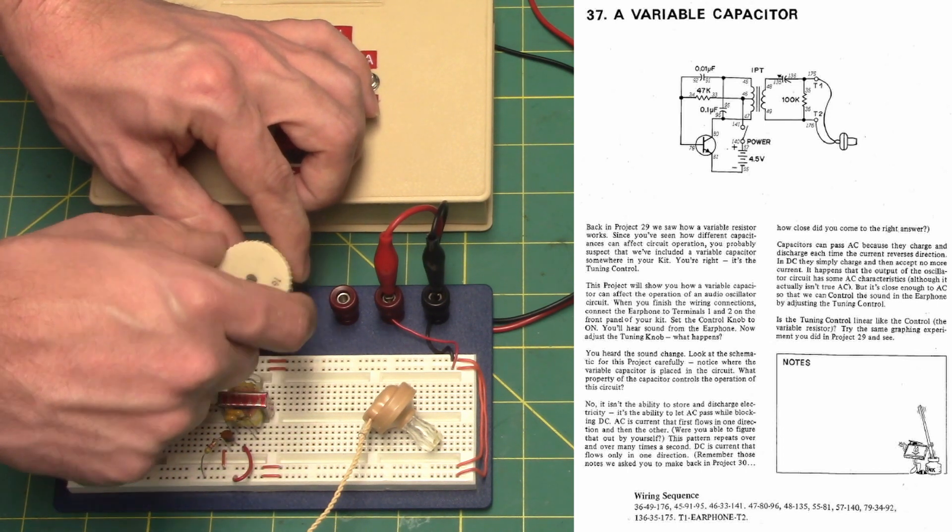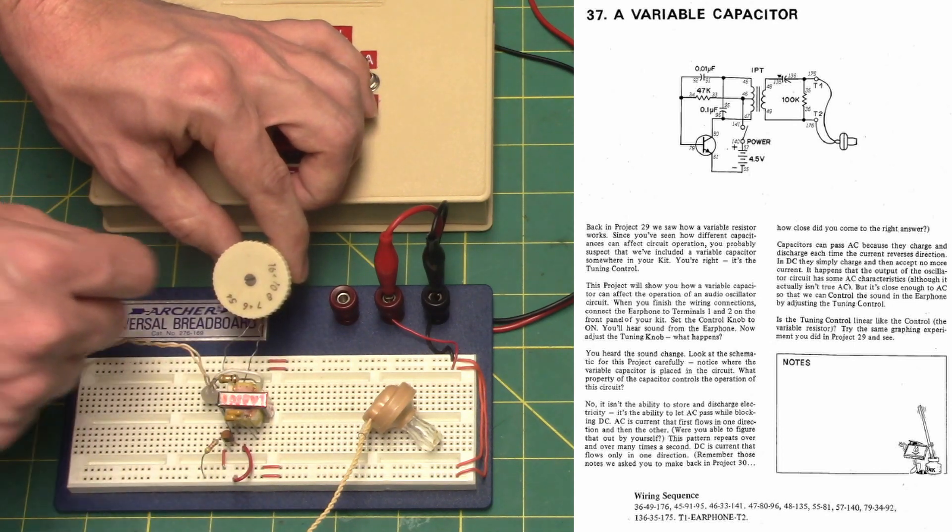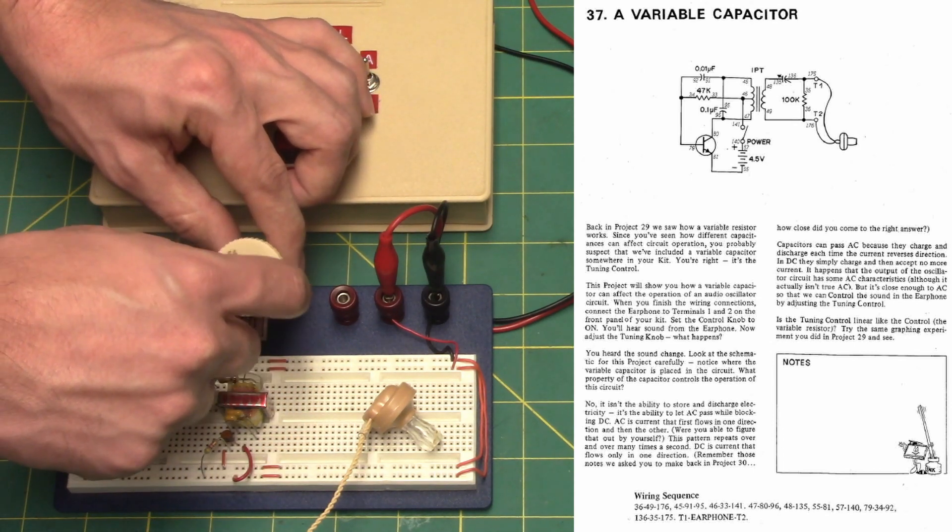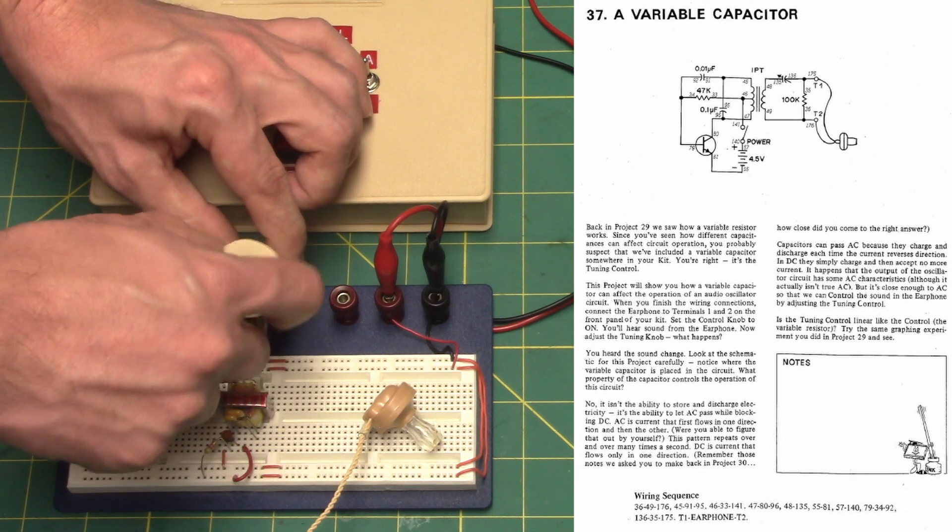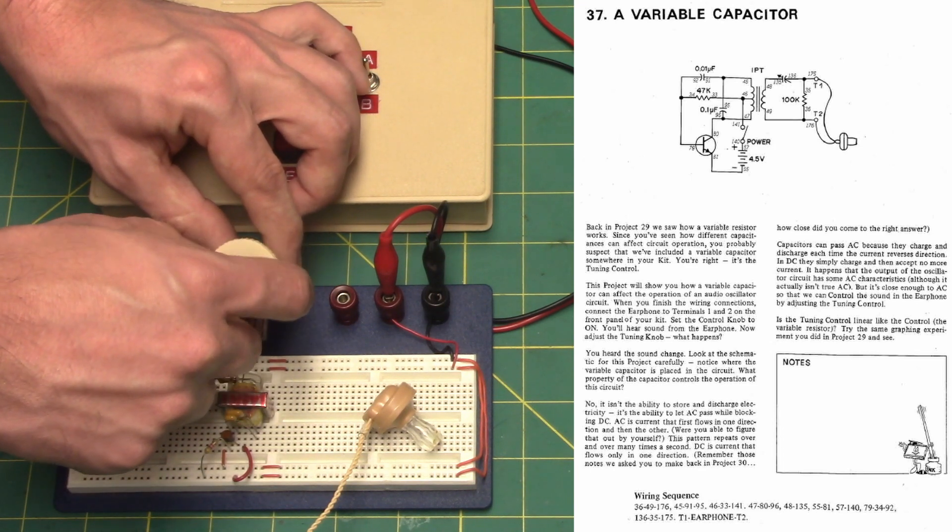Look at the schematic for this project carefully. Notice where the variable capacitor is placed in the circuit. What property of the capacitor controls the operation of the circuit?